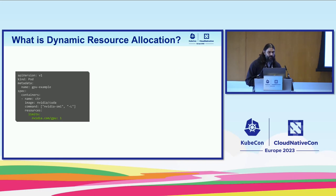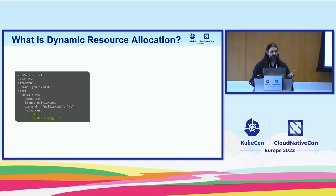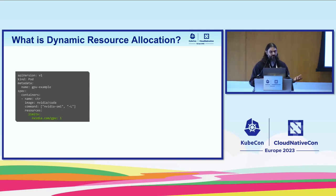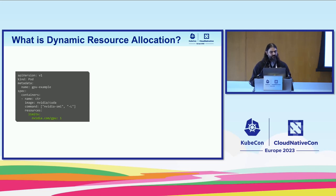Before diving into those concepts, let me walk through a quick example showing how you'd move from requesting a device via the traditional device plugin API to what that same request looks like under DRA. In a traditional device plugin, if you were to ask for a single GPU, under your limits section of your resources spec in your pod spec, you could ask for something like nvidia.com/gpu:1 and get access to that GPU at runtime.